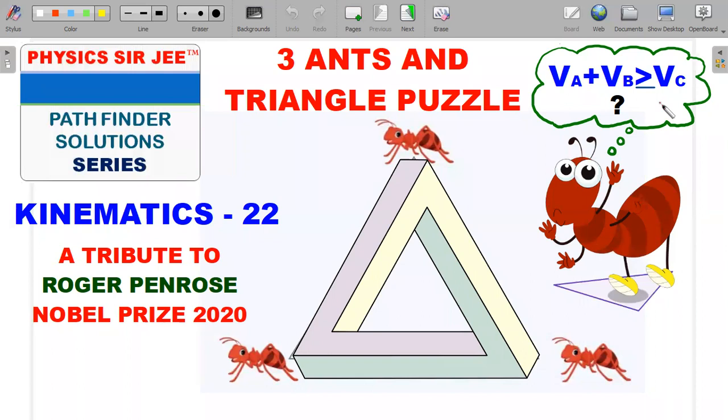It's on a three ants and triangle puzzle. This is also a video tribute to Roger Penrose, who is one of the three recipients of the physics Nobel Prize for the year 2020. I am recording this on the same day that the Nobel Prize has been announced for him and his colleagues. So let's try to first of all go through the formal wording. I'll talk about Roger Penrose a bit during the solution of the problem.